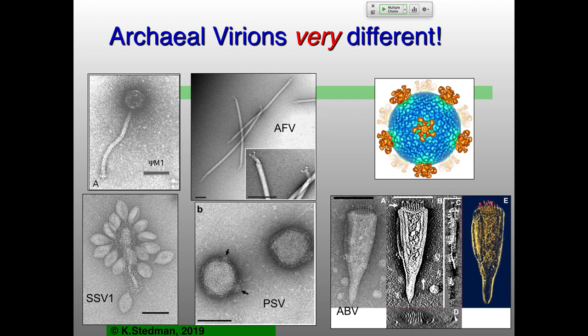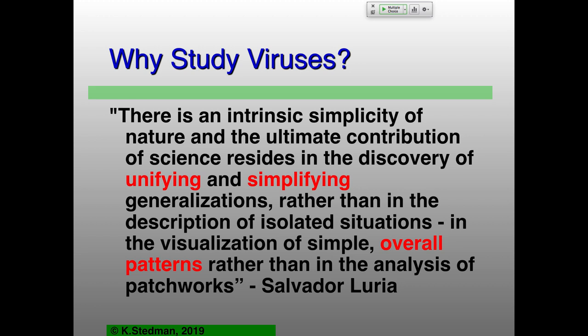Why do we want to study them, other than the fact that they're just really, really cool? Salvador Luria talked about unifying and simplifying patterns, and we're going to spend most of the rest of the term talking about some of those unifying and simplifying things. You could get into the nitty-gritty detail, but if you're going to talk about at the very minimum 15,000 different virus species, we're not going to cover all of those in the next 10 weeks — we're just going to talk about some of the bigger-picture kinds of things.